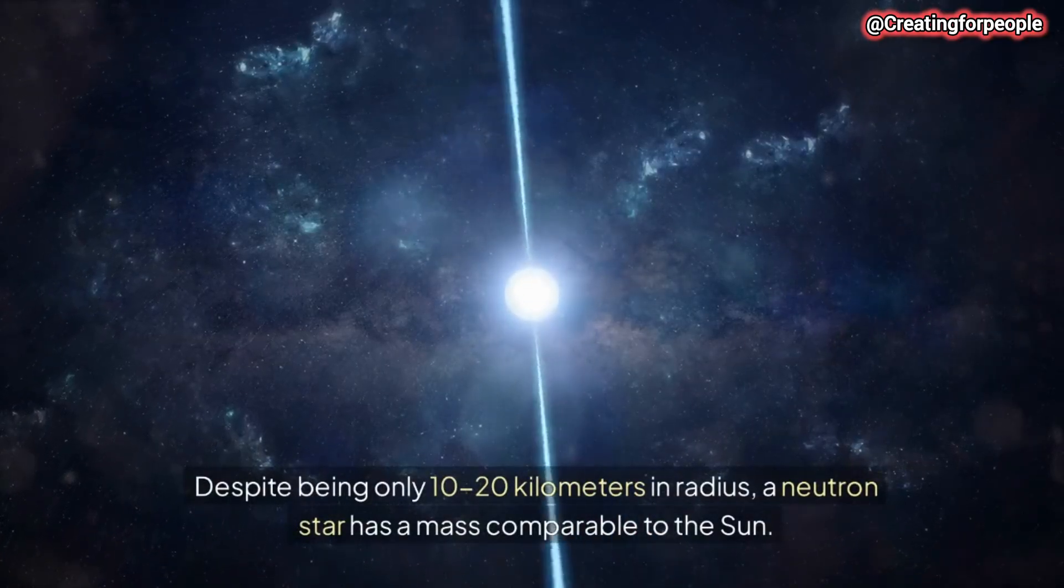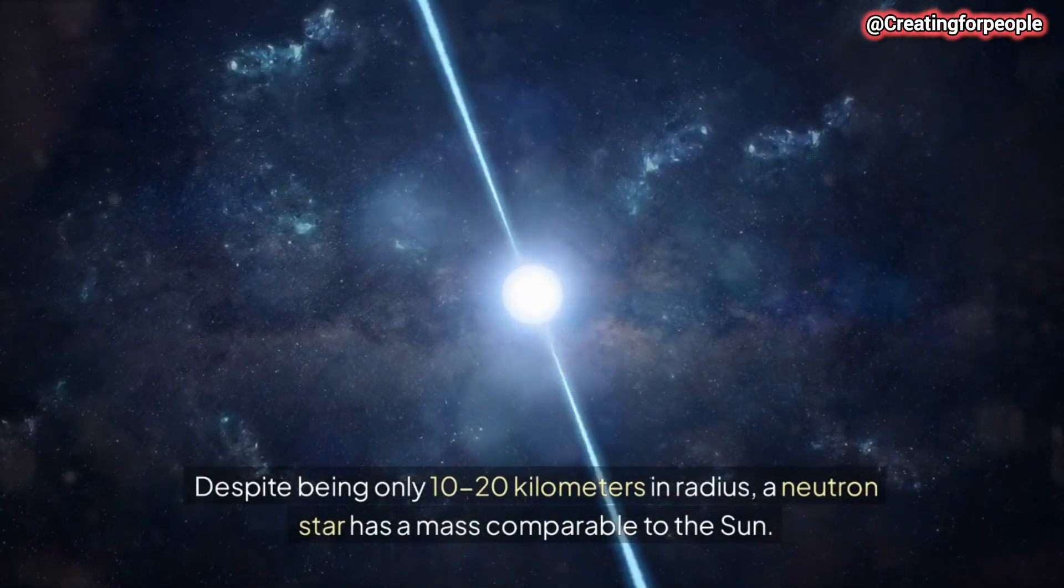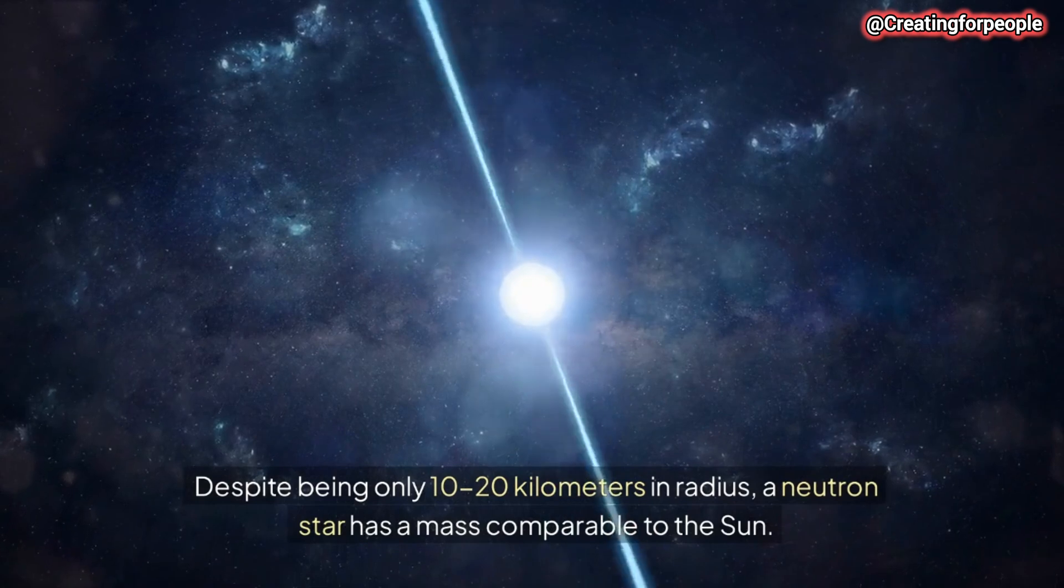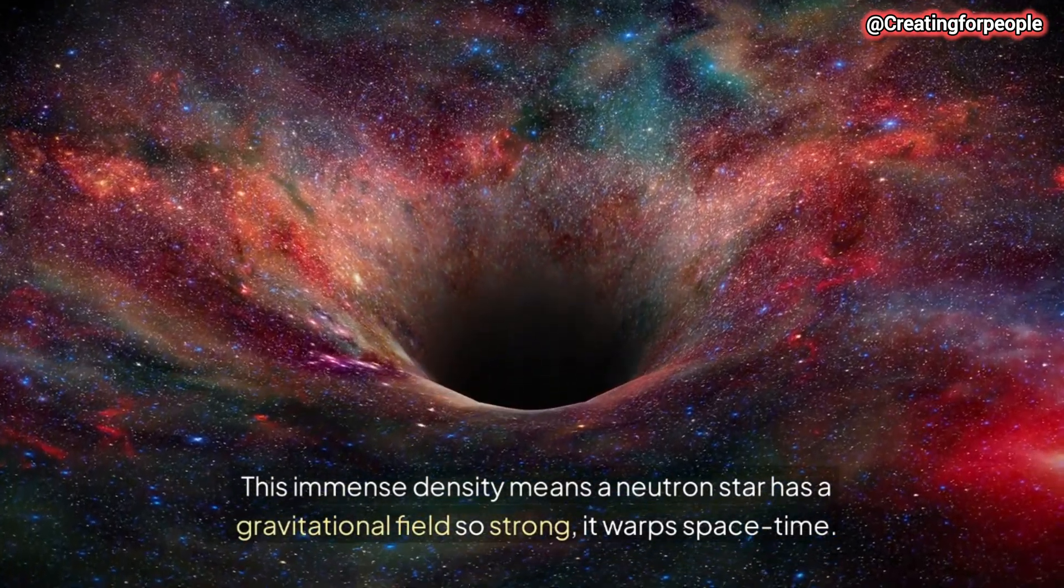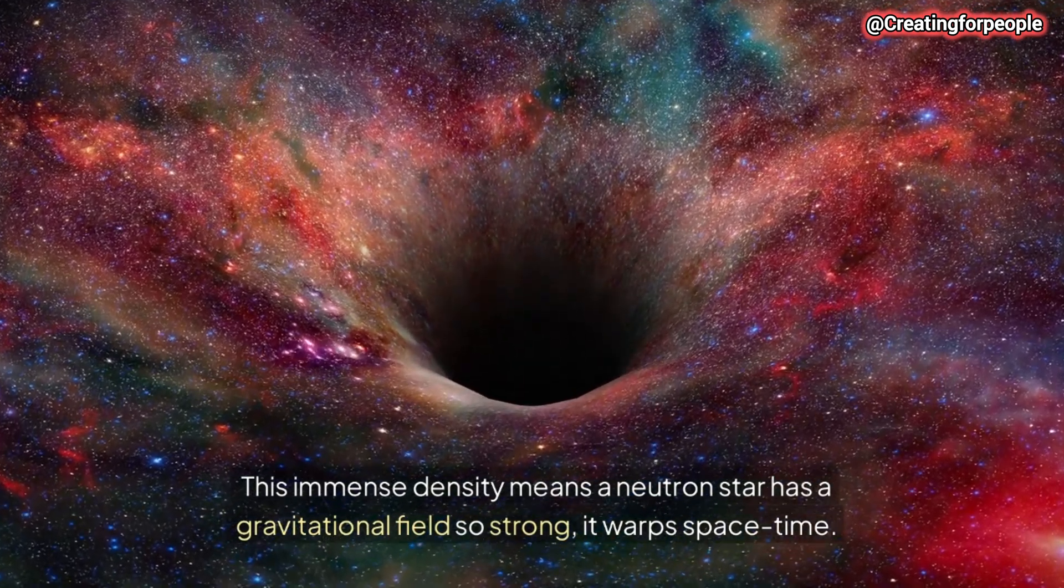Despite being only 10-20 kilometers in radius, a neutron star has a mass comparable to the sun. This immense density means a neutron star has a gravitational field so strong, it warps spacetime.